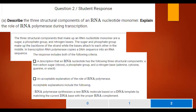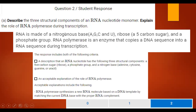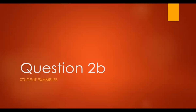Some keys to this one: when you're describing, please make sure you are describing, and make sure your wording is correct — that it's talking about what RNA polymerase actually does. Another full-point response: RNA is made of the nitrogenous bases A, G, C, and U, a ribose 5-carbon sugar, and a phosphate group. RNA polymerase is an enzyme that copies a DNA sequence into an RNA sequence during transcription. Perfect — that's a great response.